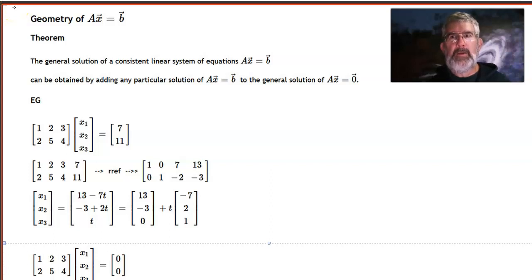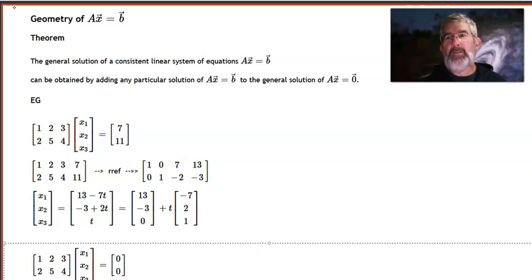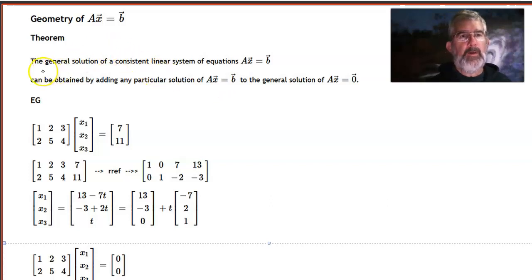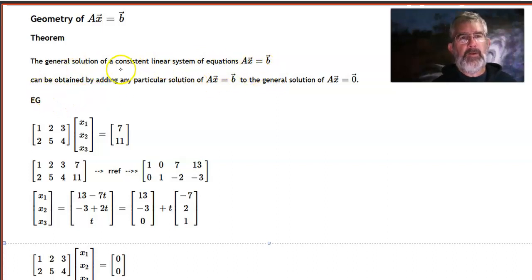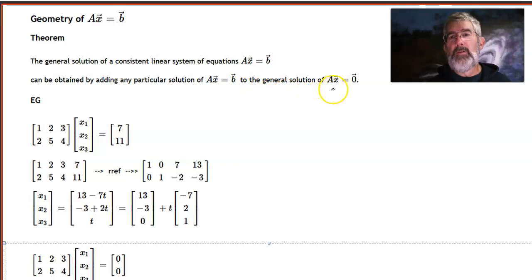In this video, I want to take a look at a bunch of stuff that we've done throughout the quarter and put it all together to talk about the geometry of solution sets to systems of equations, both homogeneous and non-homogeneous. The theorem is this: the general solution of a consistent linear system of equations Ax equals b can be obtained by adding any particular solution to that system to the general solution of the corresponding homogeneous system.